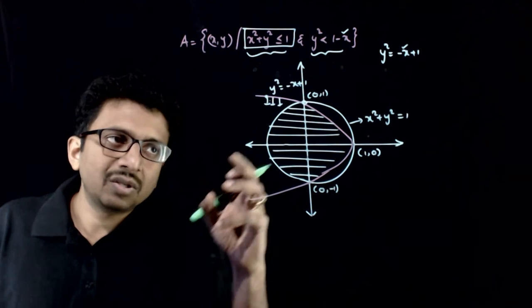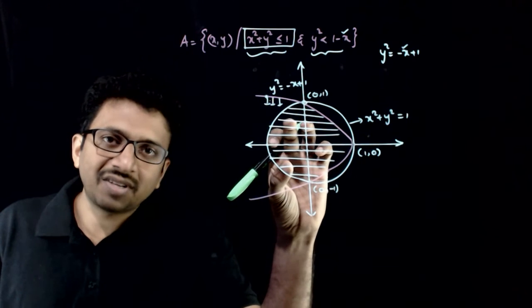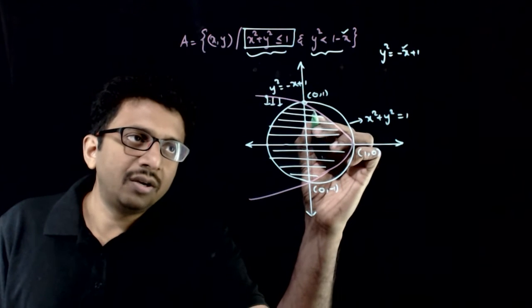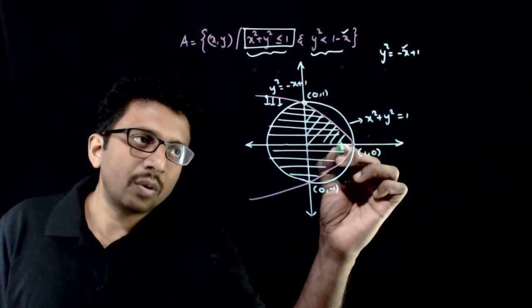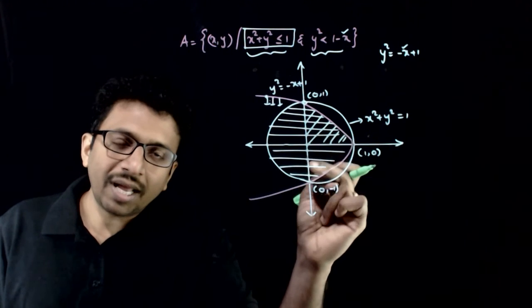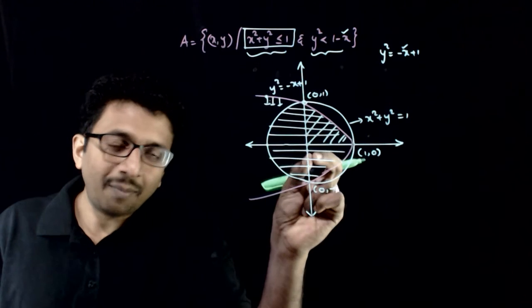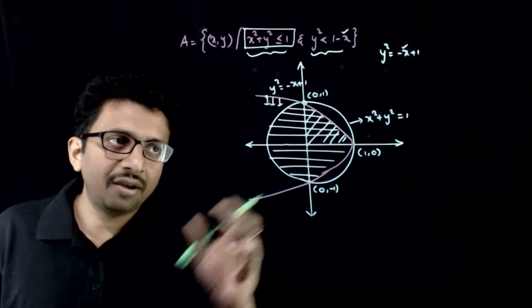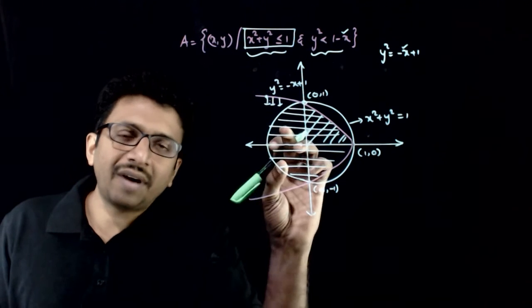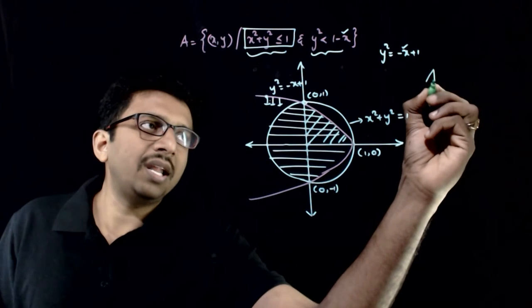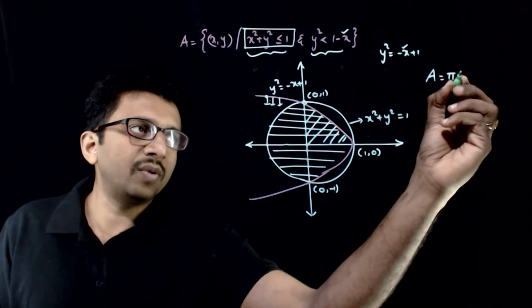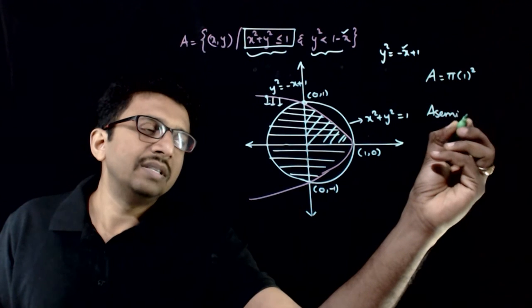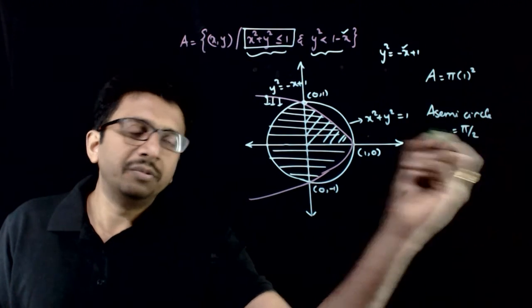To find this area, the easiest method is: you have this half circle, which can be calculated separately, and you have two symmetric segment areas. So I will find one of these areas, multiply by two, and add half the circle. The area of the semicircle with radius 1 is π × 1² / 2 = π/2.